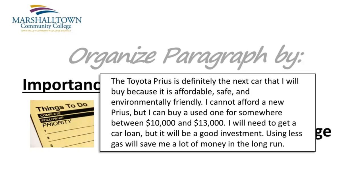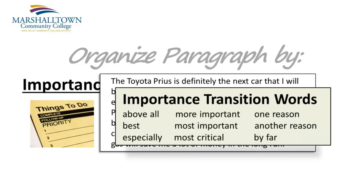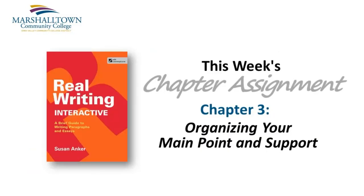In writing and composition terms, this is called an argument. This type of paragraph also uses specific transition words to help the reader understand what the author is talking about, like: above all, more important, one reason, and especially. In your textbook, you'll find some great examples for improving your paragraph using the techniques I've just mentioned.